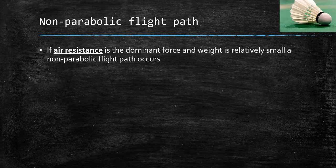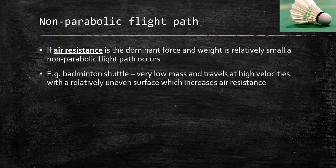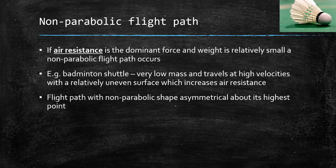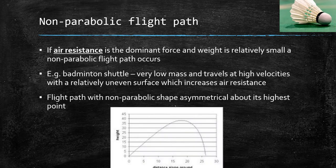Non-parabolic flight paths are determined by air resistance being the dominant force. If weight is relatively small and you have high air resistance, then a non-parabolic flight path will occur. For example, a badminton shuttlecock has a very low mass, travels at high velocities, and has a relatively uneven surface which increases air resistance. So a shuttlecock's flight path would be non-parabolic — you can see it's not symmetrical about the top of its peak.